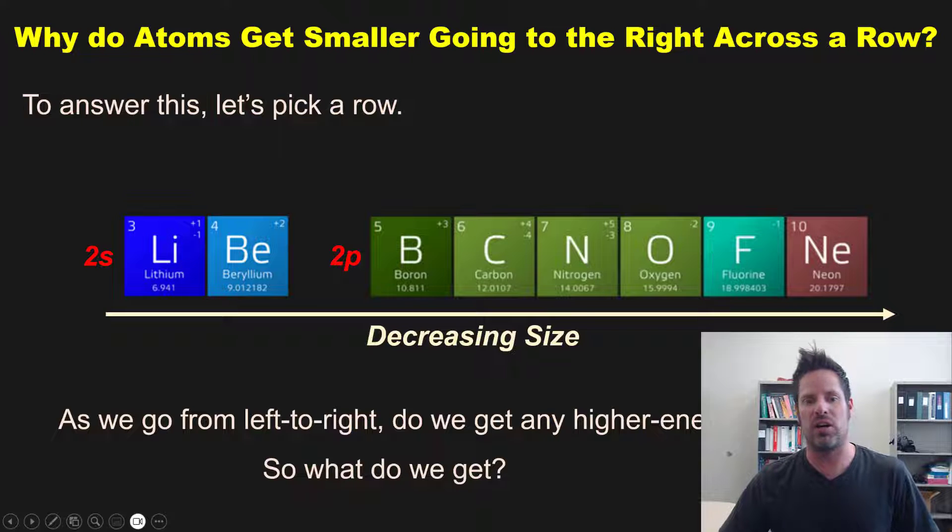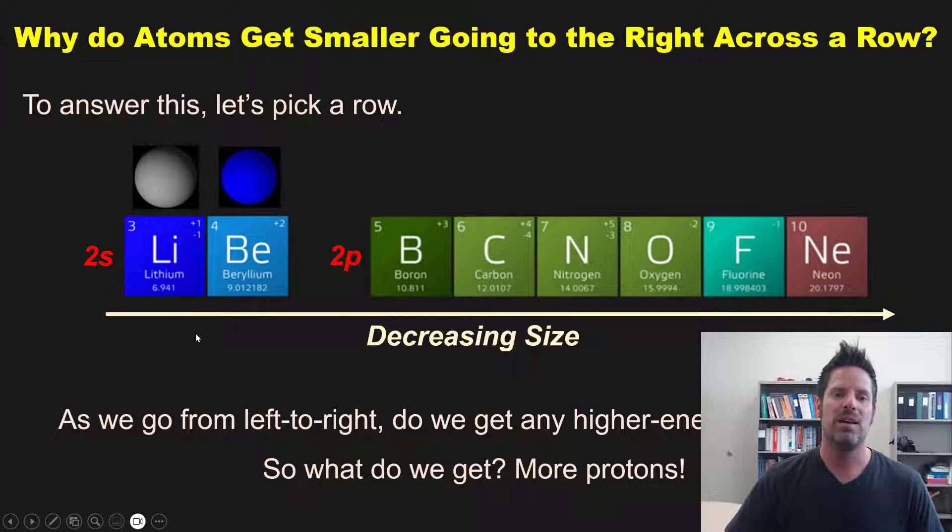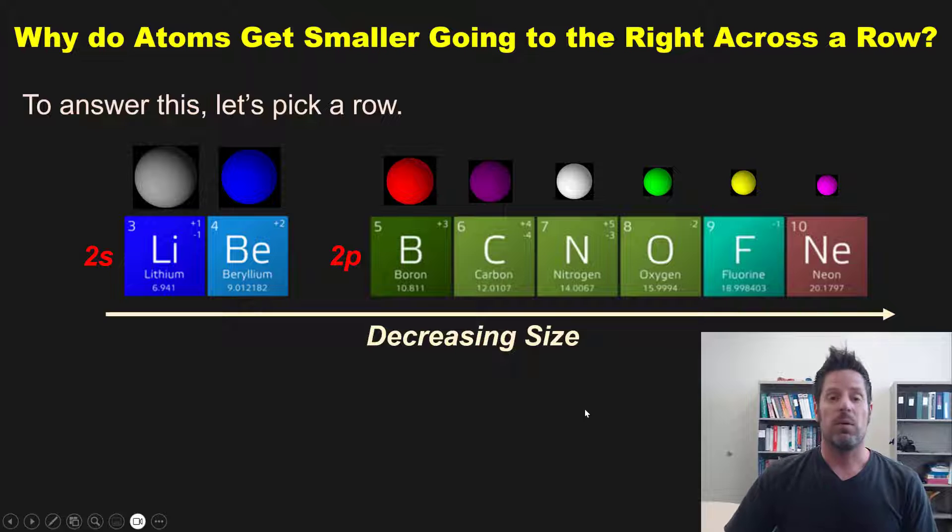So what do we get as we go across a row? You'll notice we get more protons because the number of protons in an atom is equal to its atomic number. Lithium has three protons, beryllium has four, boron has five, and so forth.